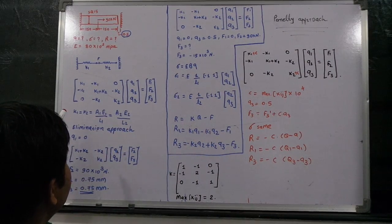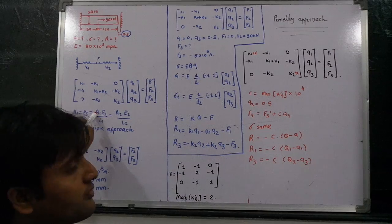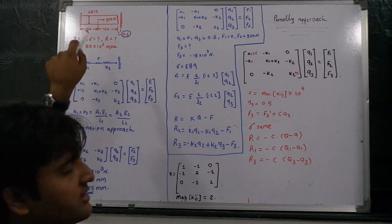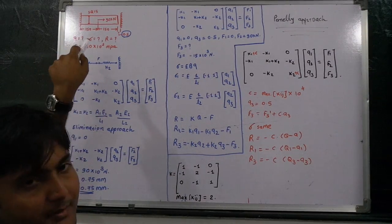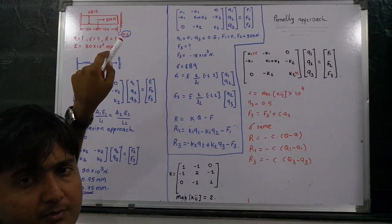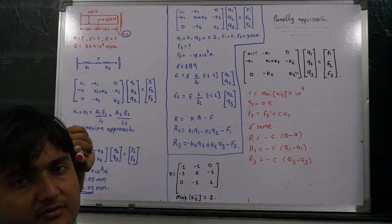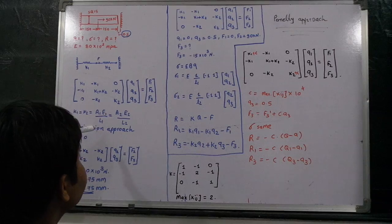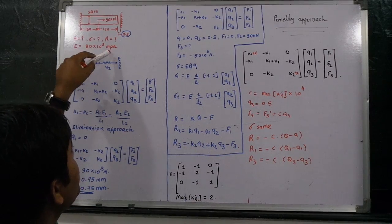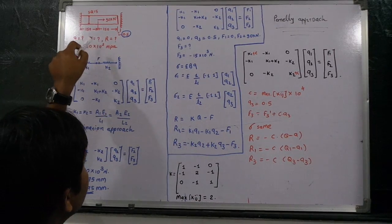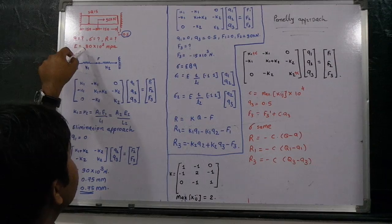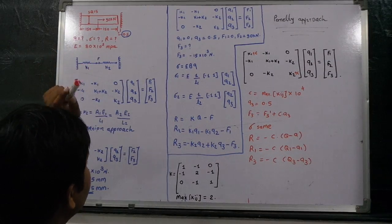K1 value would be A1E1 divided by L1 where A1 is equal to 15mm square, E1 is equal to 80 multiplied by 10 raise to 3 Newton per mm2. We need to convert it by multiplying it with 10 raise to minus 6.